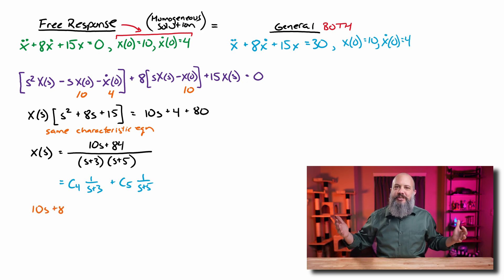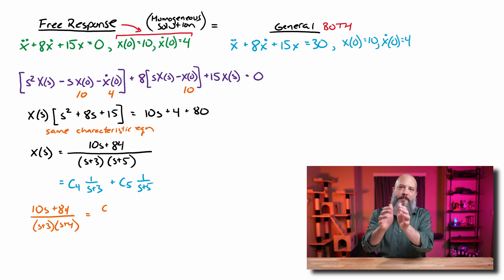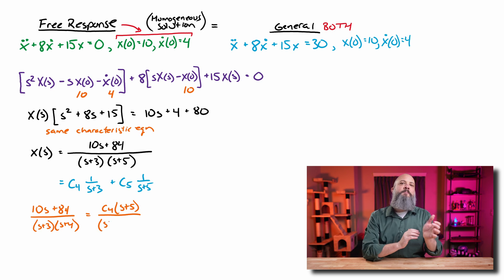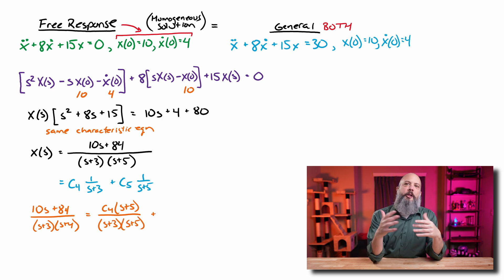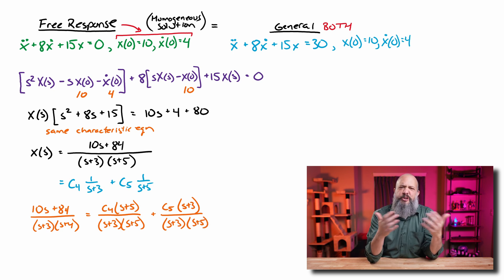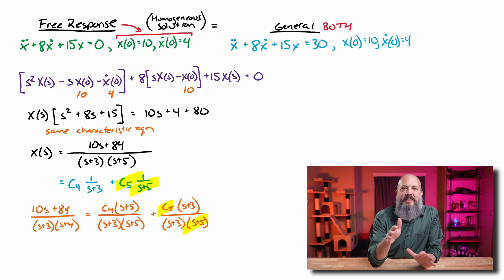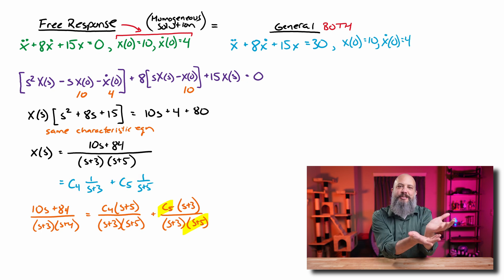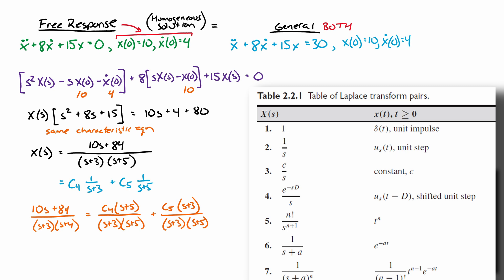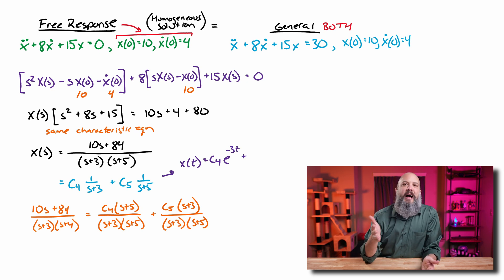For partial fraction decomposition, make sure all denominators are the same before canceling. The C4 term has to be multiplied by (S plus 5) and the C5 term by (S plus 3). I'm calling them C4 and C5 because I already used C1, C2, C3 on the last problem. Using the table, 1 over S plus A goes to e to the negative At. So the final answer for the free response — the homogeneous solution — is going to be C4 times e to the negative 3t plus C5 times e to the negative 5t.